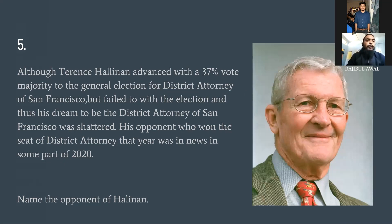Question number five, easy one: name the opponent of Terence Hallinan. Hallinan advanced with a 37-vote majority to a general election for District Attorney of San Francisco but failed to win. His opponent, who won the seat of District Attorney, was in the news in some part of 2020. Who was the opponent of Terence Hallinan?